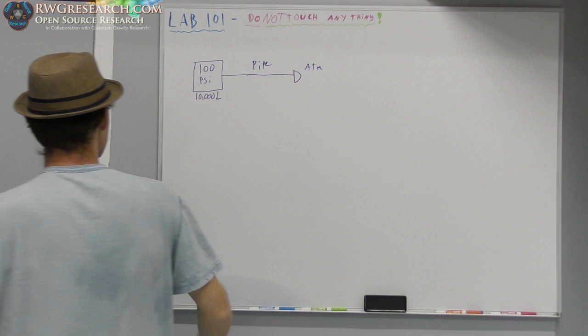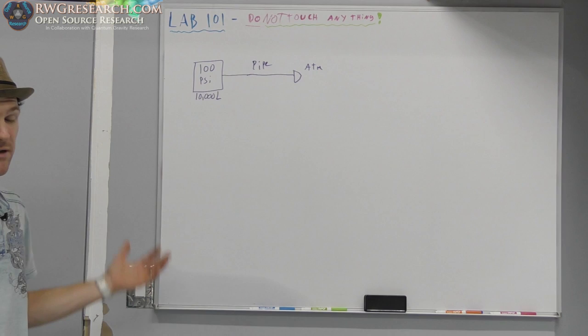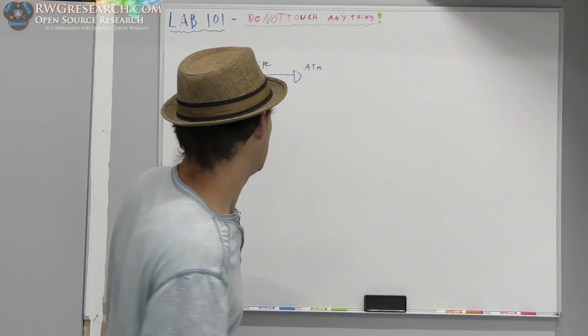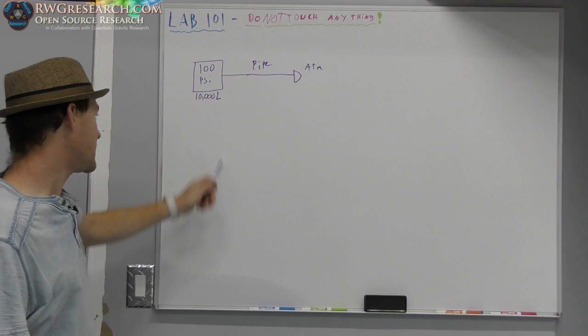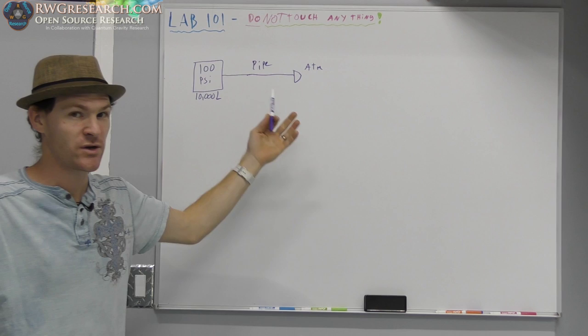So I have pressure in a tank, stored energy. I have a pipe leading to atmosphere. The pipe could be of any length of your choice. It doesn't really matter. The smaller the pipe, the longer it's going to take to dissipate this amount of pressure in this tank.